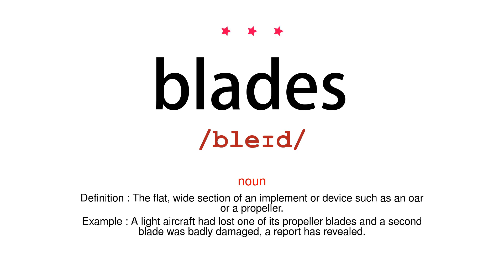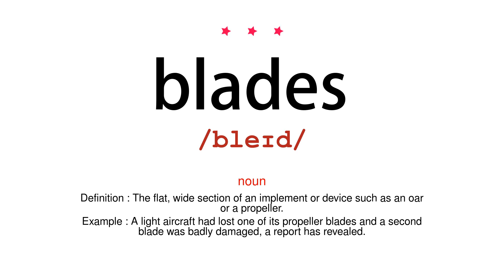Noun. Definition: the flat, wide section of an implement or device such as an oar or a propeller. Example: a light aircraft had lost one of its propeller blades and a second blade was badly damaged, a report has revealed.